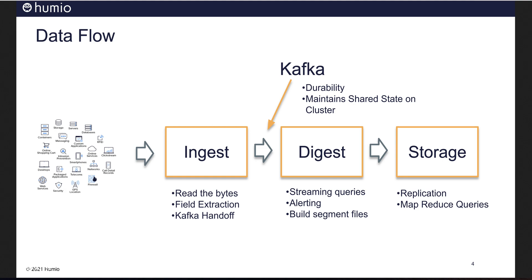The first phase is ingest. Here we read the bytes of data, extract fields and timestamps based on a configuration of a Humio parser, and hand the data off to Kafka. Kafka gives Humio durability and, among other things, helps maintain a shared state when Humio is clustered for scale. Kafka is also instrumental in the digest phase, where alerts as well as live or streaming queries are executed.